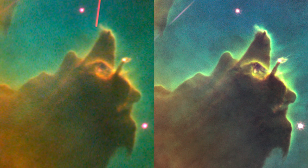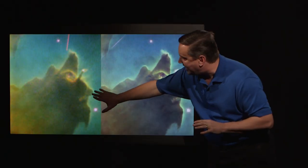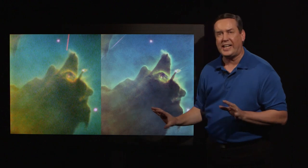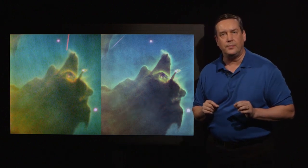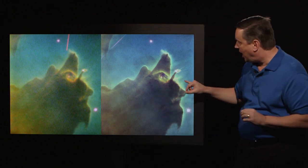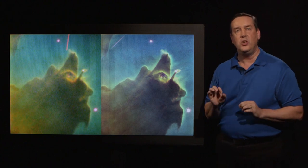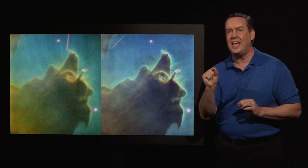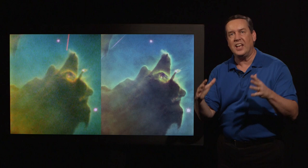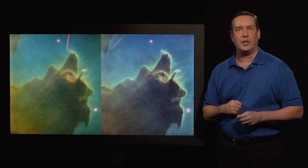One particularly interesting feature is that these ionization fronts — that yellow region along the edge of the dark gas — were unresolved in the original image. They are also unresolved in the new image, which means this is a very thin layer on the edge of the dark nebula where the ionization is happening.